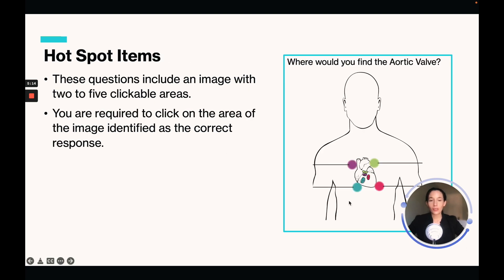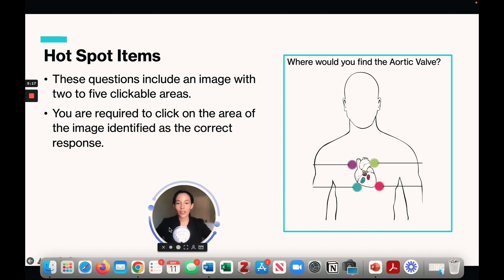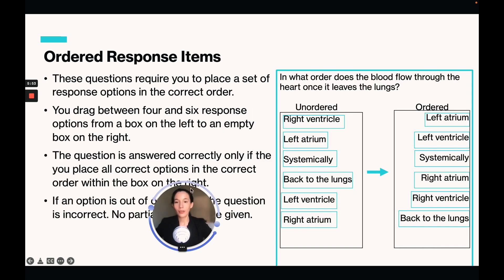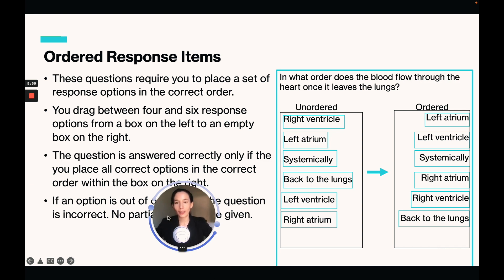For hot spot items, it's going to include an image with two to five clickable areas and you're required to click on the area identified as the correct response. For example, where would you find the aortic valve? You'd have four hot spots on a heart diagram, and you would click the correct location — that's how you answer a hot spot question.